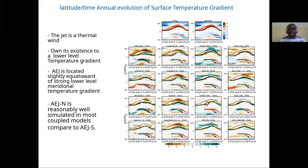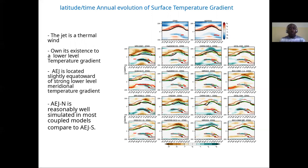We also represent the bias of temperature gradient against reanalysis in models. We can clearly see that the jet is a thermal wind which owes its existence to a low-level meridional temperature gradient. Africa East Allegiance north is reasonably well simulated in most coupled models compared to Africa East Allegiance south, where the location of the jet always corresponds to the region of strong meridional temperature gradient.